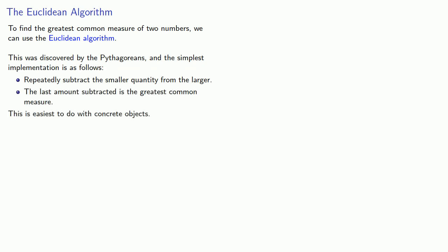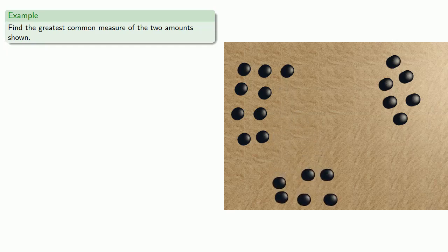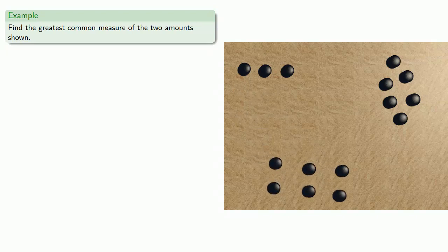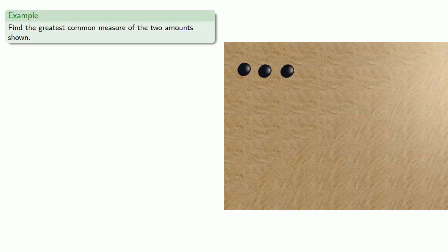This is easiest to do with concrete objects. So let's find the greatest common measure of the two amounts shown. The amount on the right is the smaller, so we'll subtract it from the larger by separating out and discarding an amount equal to the smaller amount. We'll separate out, then discard, and again separate, and discard. Now the amount on the left is the smaller, so we'll separate an amount and discard, and separate and discard. What's left was the last amount we discarded, and so that's the greatest common measure.